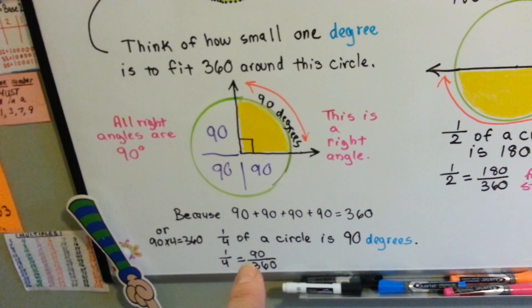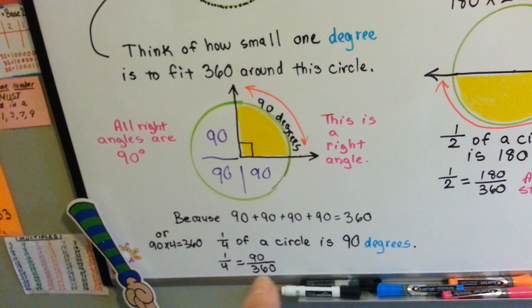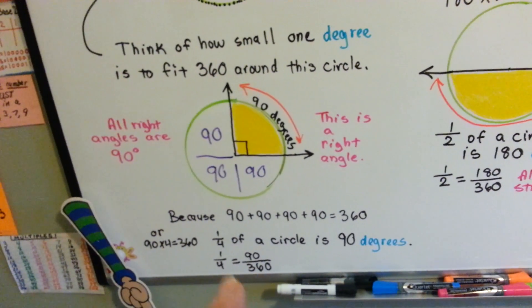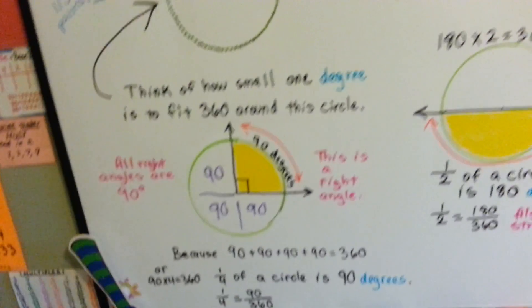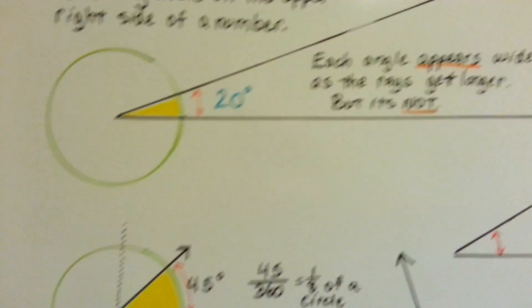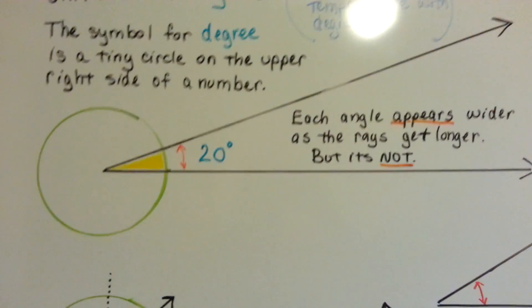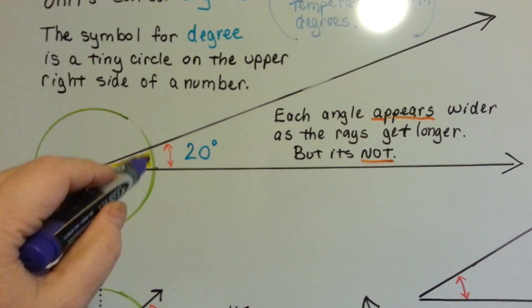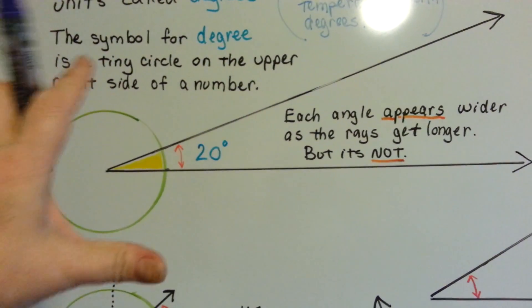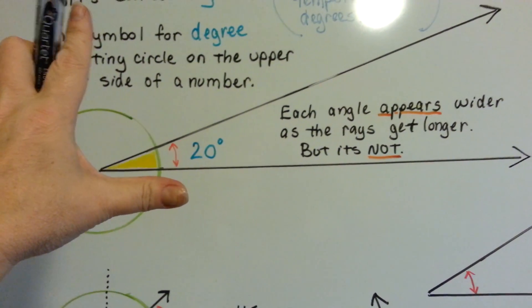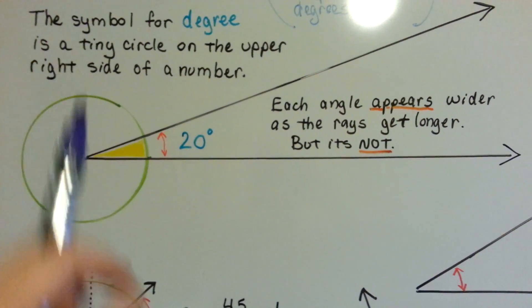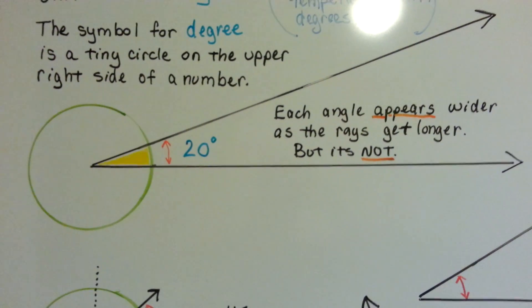One-fourth is equal to 90 over 360 — it's 90 parts of 360. So here we go with this one. This angle is 20 degrees. Remember, that's 90 — the square one. And this little part would be 20 degrees.